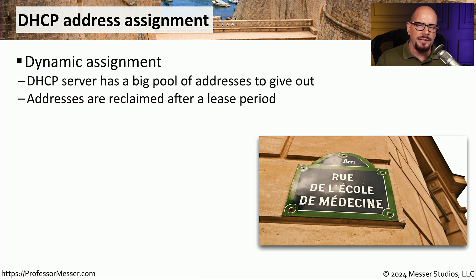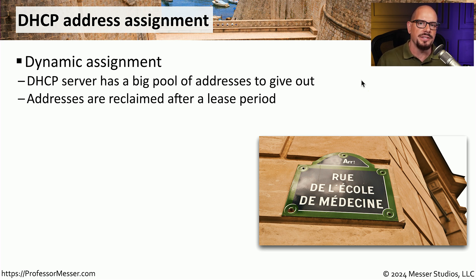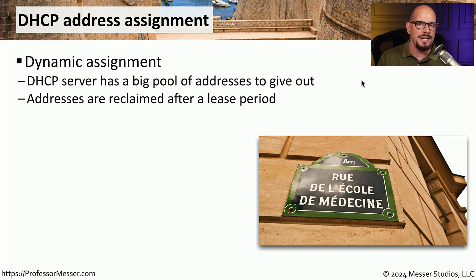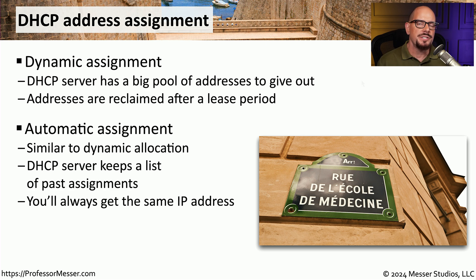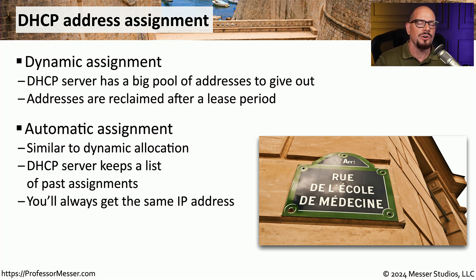This process happens automatically for end stations. They make a request to the DHCP server, and the server goes through the pool of addresses, picks one, and hands it out to that device on the network. There's a lease period associated with this address, so that device is able to use that IP address for only a limited amount of time. If that lease is not renewed, that address is returned to the pool, and someone else visiting that network can potentially be assigned that IP address. An interesting feature of DHCP is that it keeps track of MAC addresses and IP addresses it's pairing together. So if you visit this network again and the IP address you used previously is still available, you will be assigned the same IP address you had on your original visit.